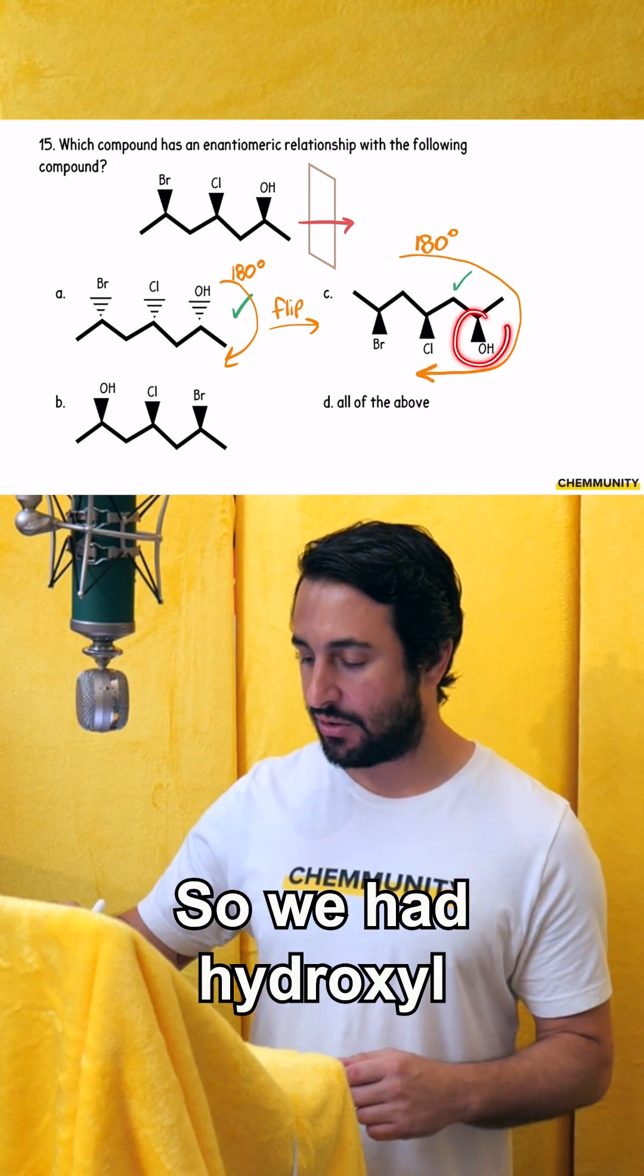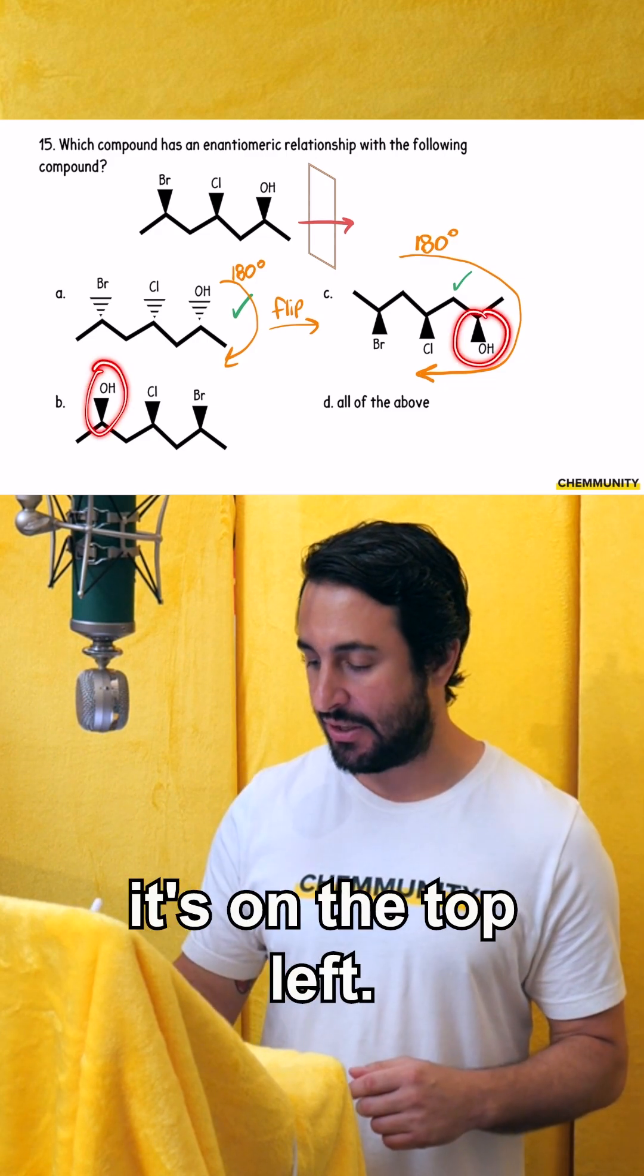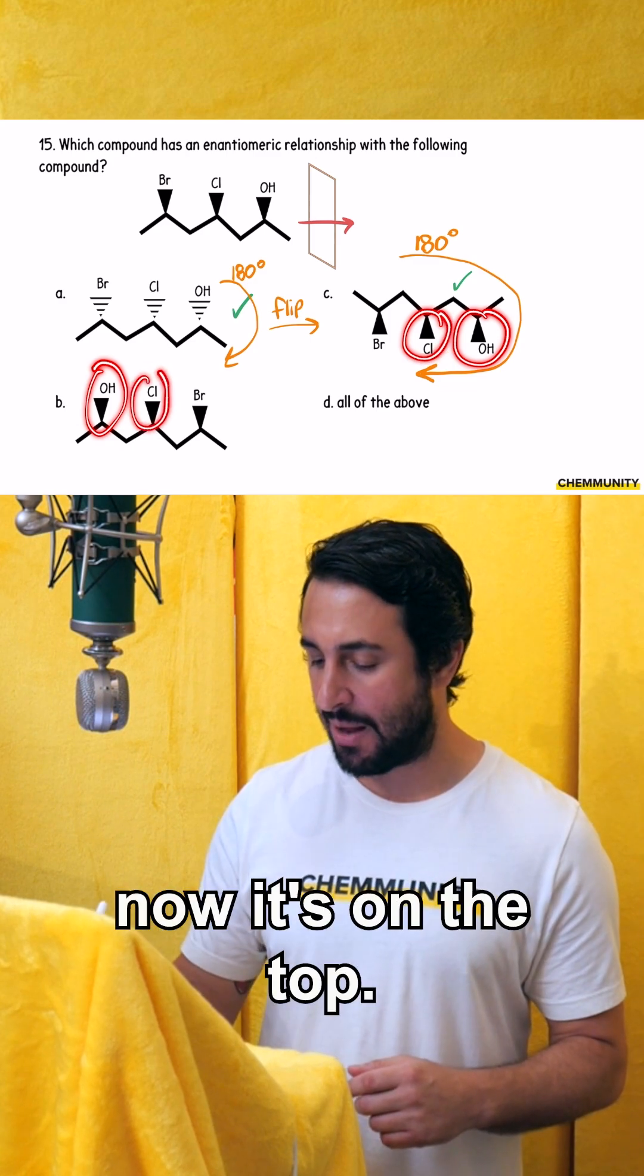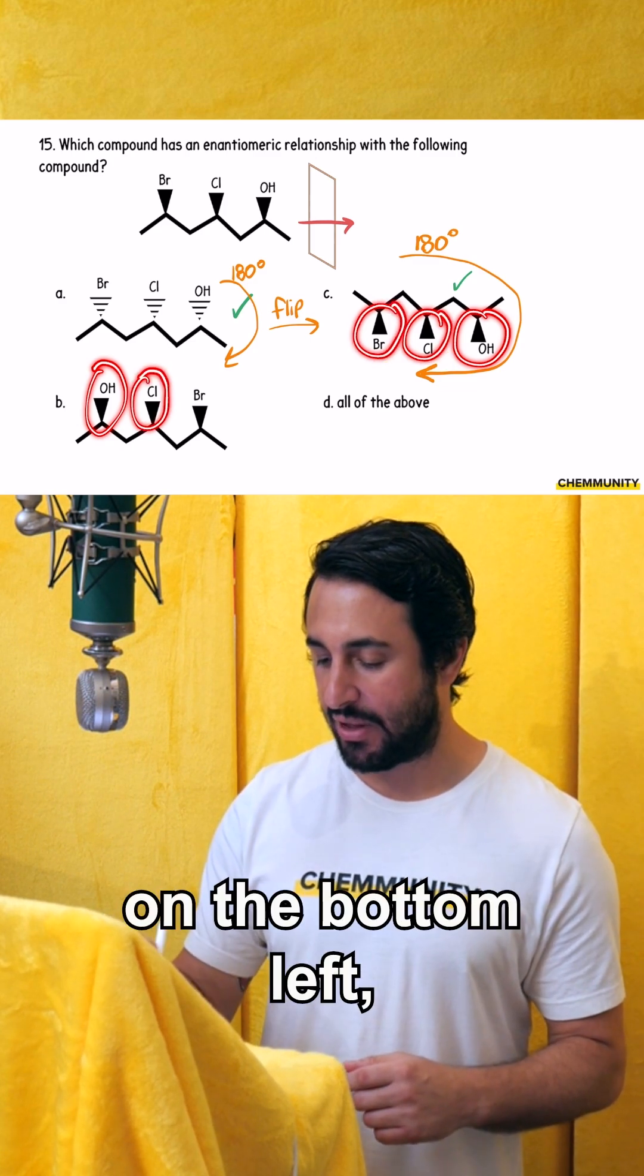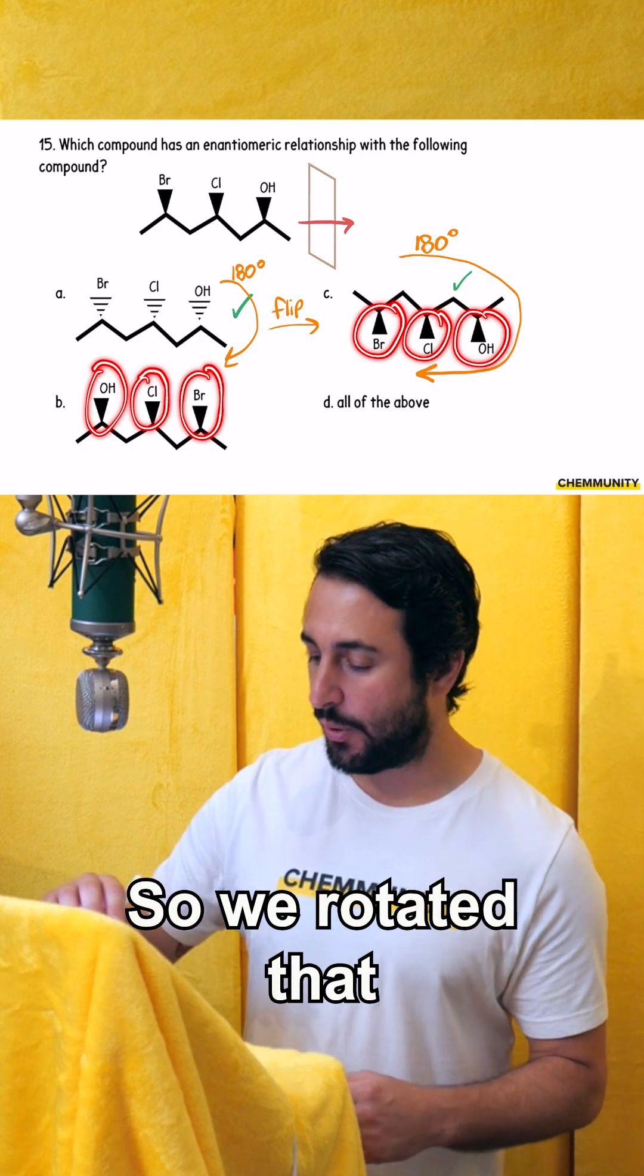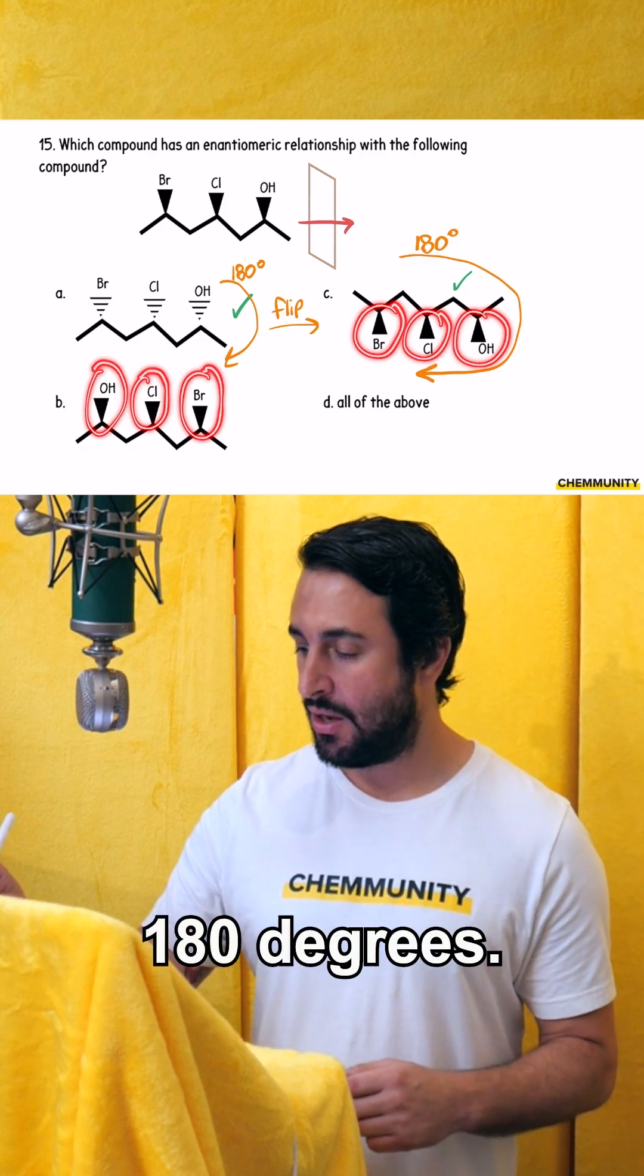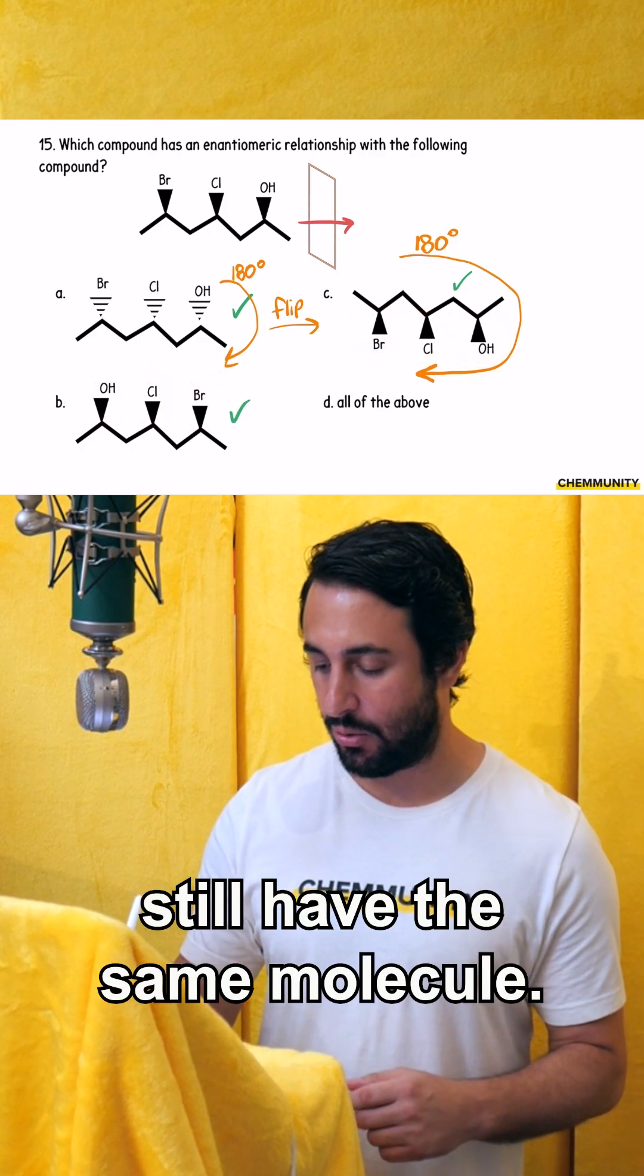We had hydroxyl on the bottom right. Now it's on the top left. We had chlorine in the middle on the bottom. Now it's on the top. And then we had bromine on the bottom left. Now it's on the top right. So we rotated that 180 degrees. We do still have the same molecule.